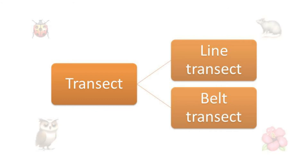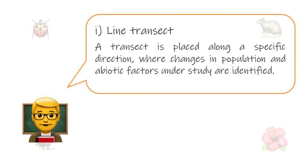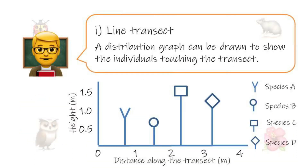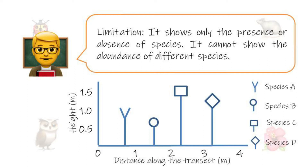Let's look at two common ways to use a transect. First, the line transect. In the line transect method, a transect is placed along a specific direction where changes in population and abiotic factors under study are identified — for example, along the slope of an area of grassland, or from the upper shore towards the lower shore of a mangrove area. A distribution graph can be drawn to show individuals touching the transect. This method is most suitable for studying the range of distribution of a species in the habitat. However, it shows only the presence or absence of species.